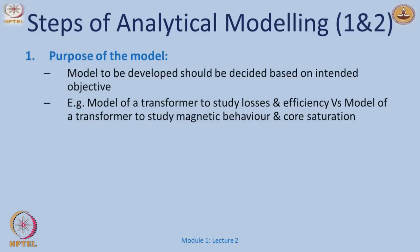The purpose of the model should be based on the intended objective. For example, if studying a transformer for its losses and efficiency, we would use its equivalent circuit model. Whereas if studying its magnetic behavior — such as core saturation — we would look at the core behavior instead.